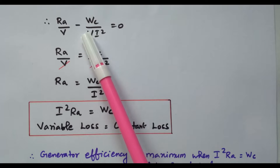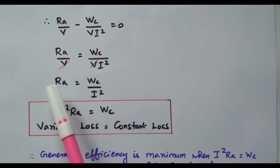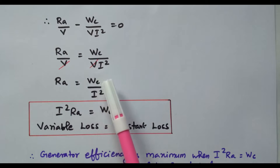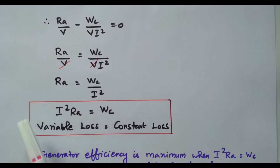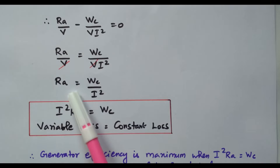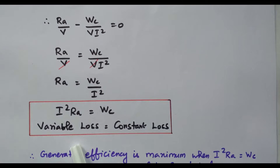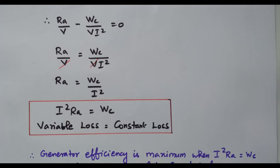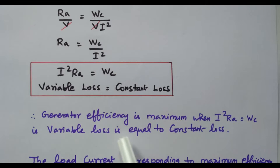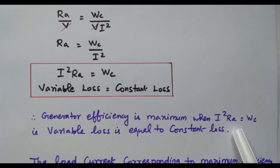Bringing the term to the right-hand side: RA/V = WC/(VI²). The V cancels on both sides, giving RA = WC/I². Rearranging: I²RA = WC. Here, I²RA is the variable loss and WC is the constant loss. So the condition for maximum efficiency is: variable loss equals constant loss. The generator efficiency is maximum when I²RA = WC.